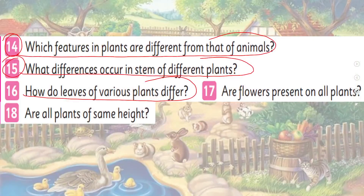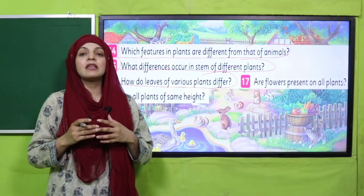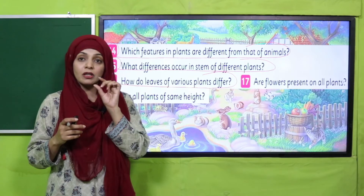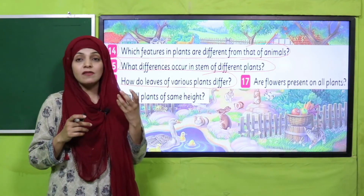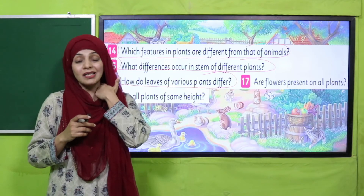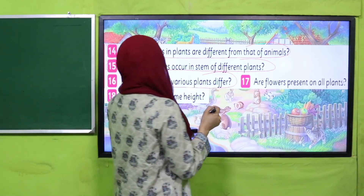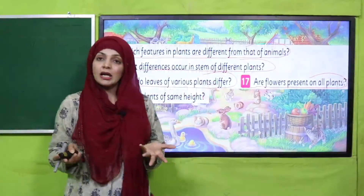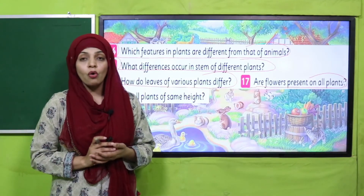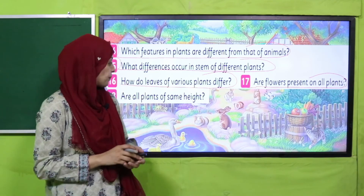How do leaves of various plants differ? Some leaves are extremely big, some leaves are very small, and some leaves are thorny — for example, a cactus does not have leaves; instead it has spines on it. This is how leaves of different plants differ from each other. Question number 17: are flowers present on all plants? No, all plants do not bear flowers.